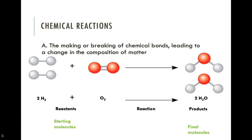Those are the final molecules, or the product of this chemical reaction. You'll notice that all of the atoms in the reactants are accounted for in the products — they don't disappear. Matter doesn't disappear. It is just rearranged in these chemical reactions. The bonds are broken between the hydrogens and between the oxygens, and they are reformed between hydrogen and oxygen to form water.